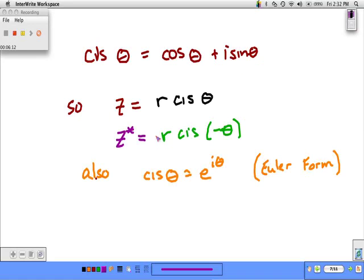So z, our complex number, equals r cis of theta. The conjugate, a reflection across the real axis, would be r cis negative theta, because we're just rotating the other way. There's another form for a complex number: cis of theta equals e to the i theta. That's called Euler's form and will be derived later in the book.